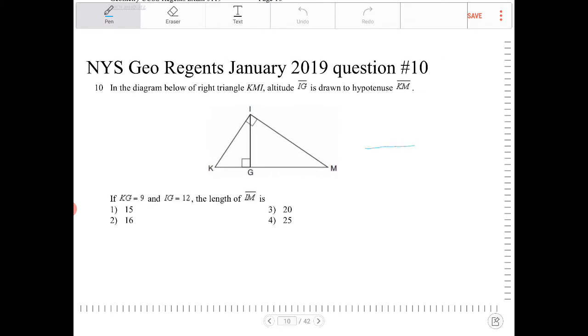This kind of problem turns up all the time in the geometry Regents. And what you need to understand is, in a right triangle, if we draw an altitude from the right angle to the hypotenuse, the altitude is going to partition the hypotenuse into two segments.